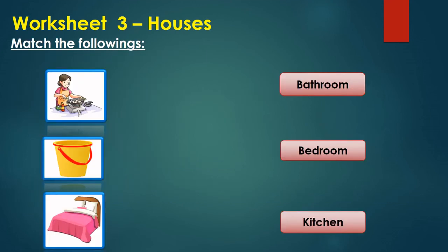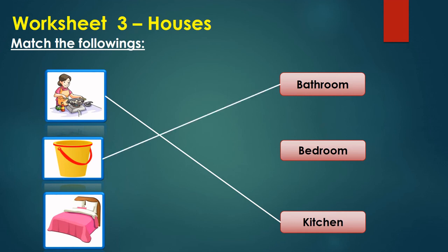Moving to third worksheet — match the followings. In the first image, the woman is cooking, so we can relate this to kitchen. The second image is a bucket, so we can relate bucket to the bathroom. The third image is of a bed, so we can relate bed to the bedroom.